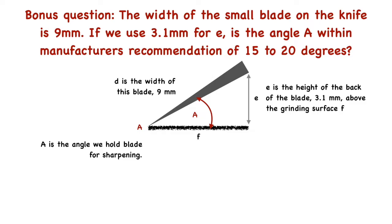Here's a bonus question. I measure the width D of the small blade on the knife as 9 millimeters. If we use 3.1 millimeters for E, then is the angle A that we hold the blade still within the manufacturer's recommendation of 15 to 20 degrees?